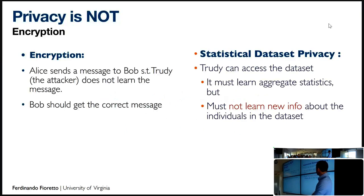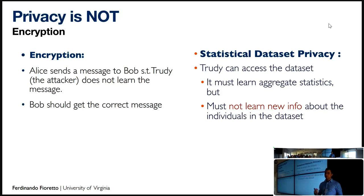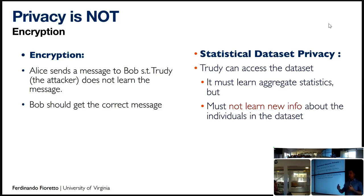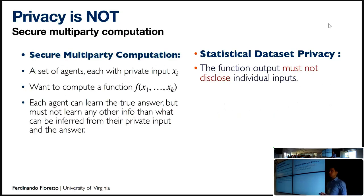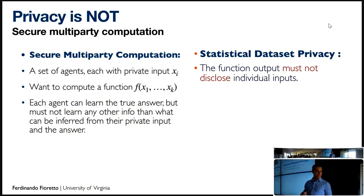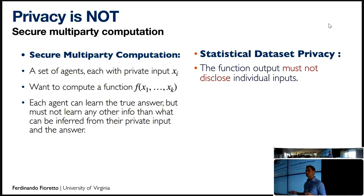Before defining privacy, let's check what privacy is not. Privacy is not encryption. Encryption tells us that Alice sends a message to Bob such that Trudy, the adversary, does not learn the message. Privacy instead tells us that Trudy can access the dataset, but by learning aggregated statistics, no private information should be leaked. Privacy is also not secure multi-party computation, where agents collectively compute a function and each learns the true answer but not others' private inputs. In statistical dataset privacy, the function outputs must not disclose the original inputs.